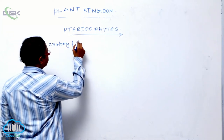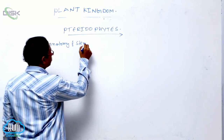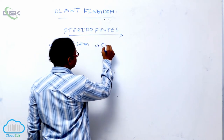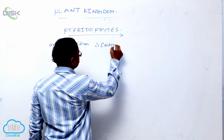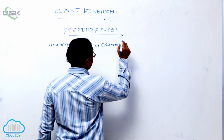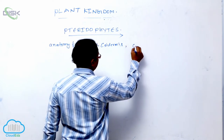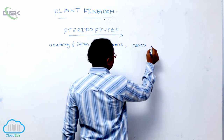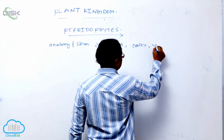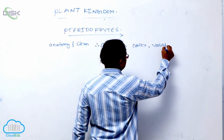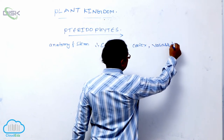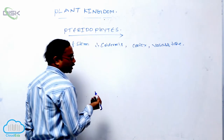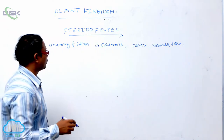In the anatomy of the stem, the outer layer is known as the epidermis. After the epidermis is the cortex. After that cortex is known as the vascular tissues. Vascular tissues are formed for the first time in tracheophyta.